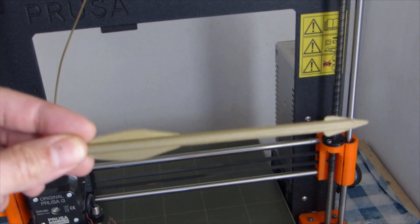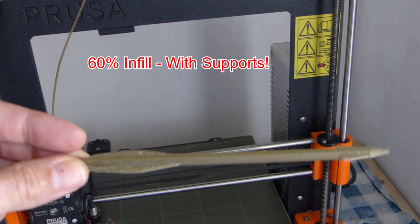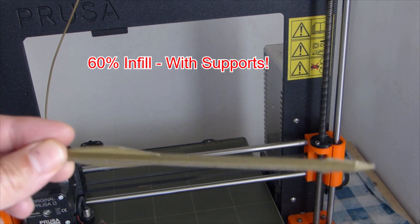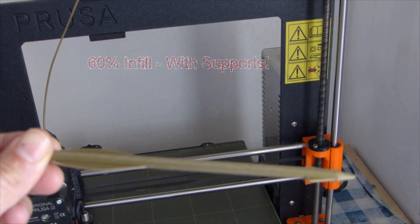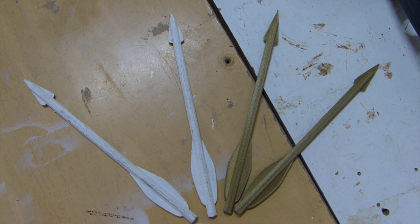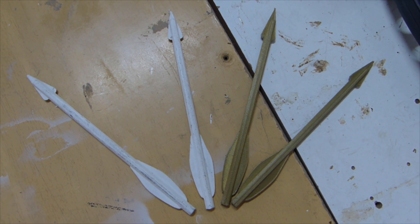Since I did not have proper arrows or bolts to fire with, I found some good 3D printed arrows that I printed in PLA at 60% infill and work fine. The links for these arrows are in the description below.